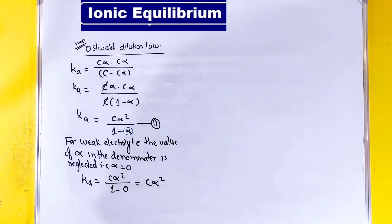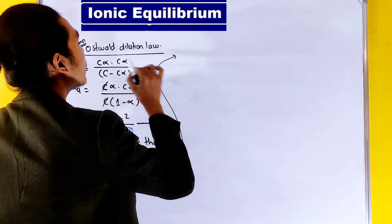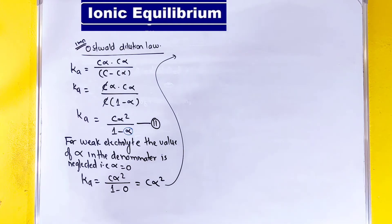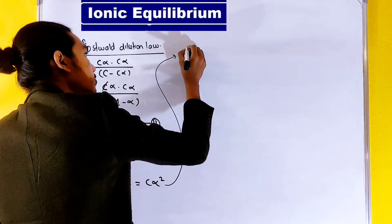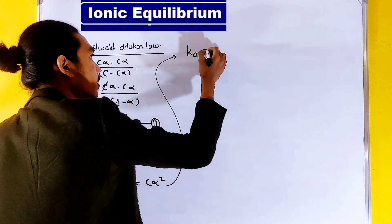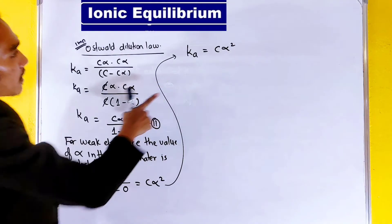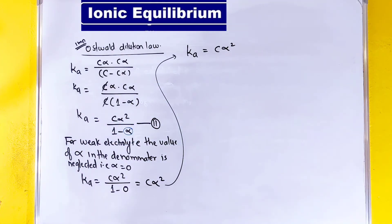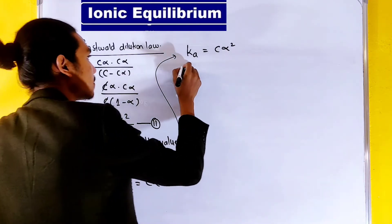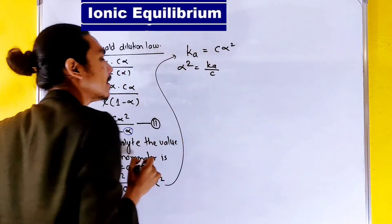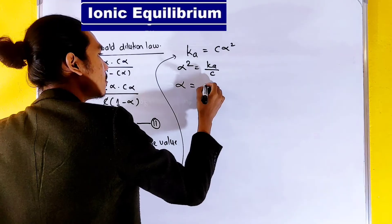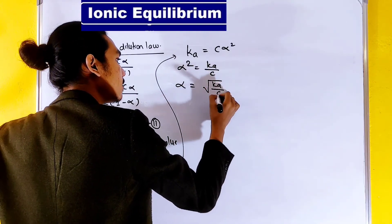So we now have Ka equals C-alpha squared. We substitute and rearrange: alpha squared equals Ka divided by C, so alpha equals the square root of Ka divided by C. This is equation 3.